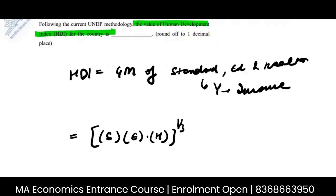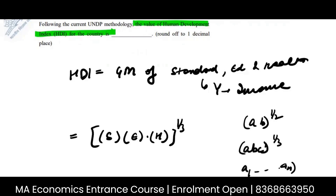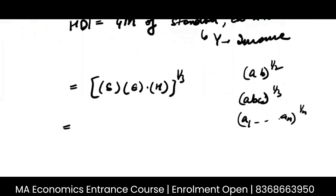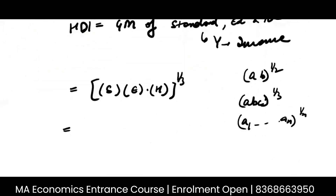Geometric mean of A and B is (A × B)^(1/2). For A, B, C it is (ABC)^(1/3). For A1 through AN, everything is multiplied together to the power 1 by N.